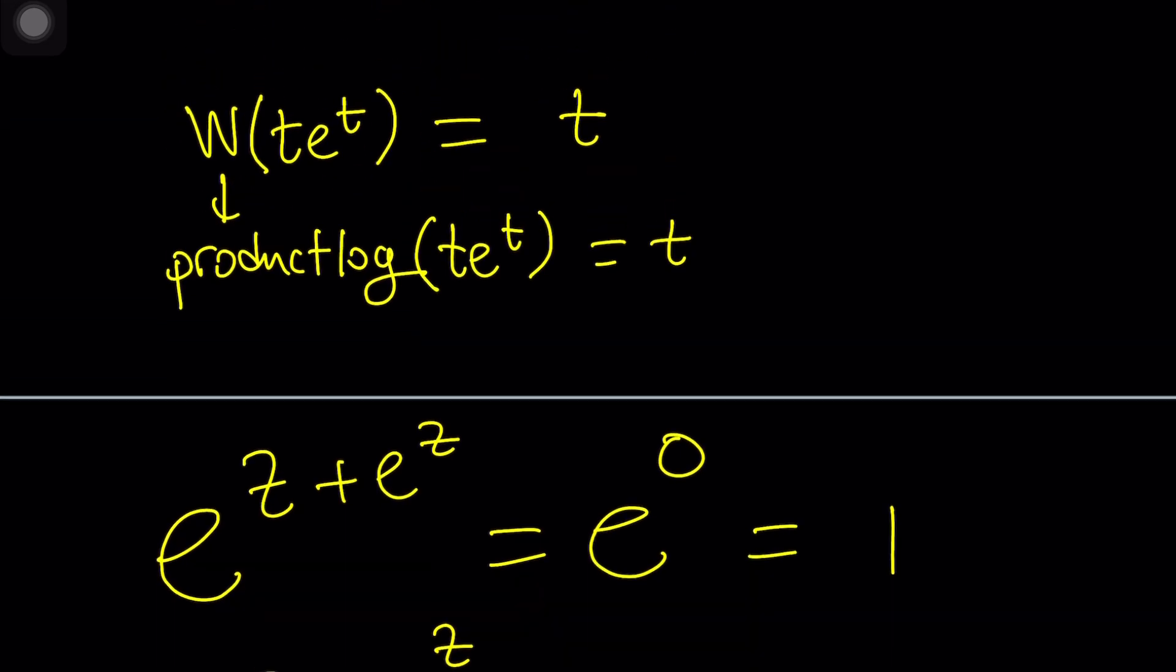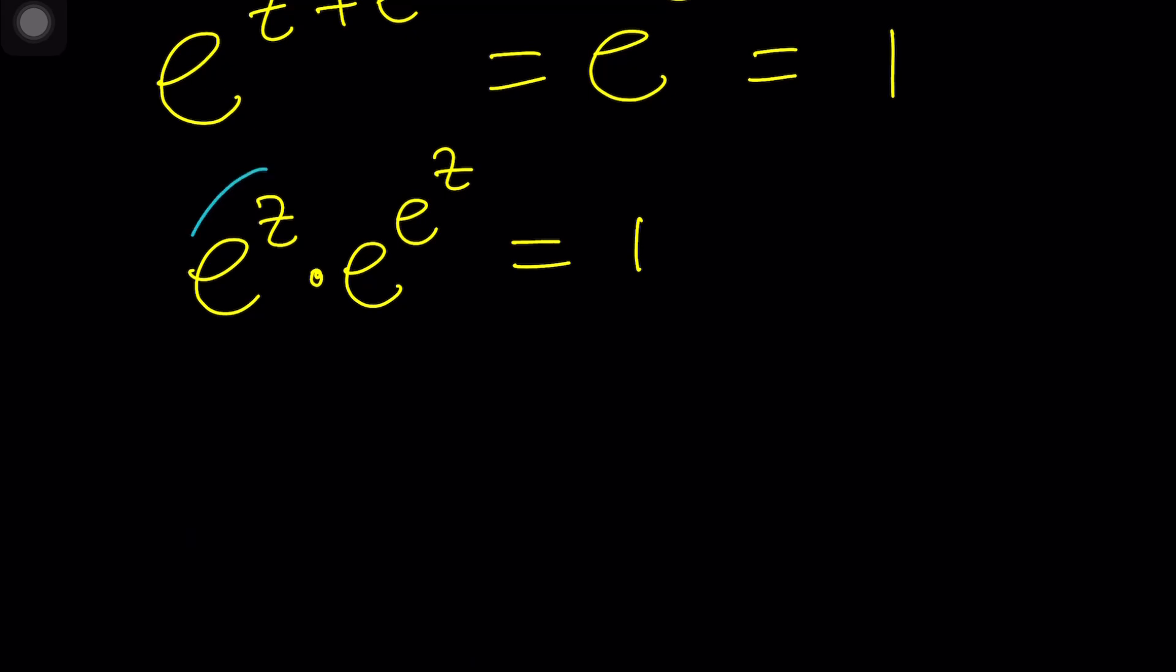Now, if you look at this problem or the Lambert's W function, look back, you wanted an input of T to the T. Did we get that? Yes. If you call this T, then you got it. Because this is going to be your T as well. So we have the structure, the format T, E to the T. Awesome.